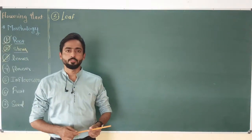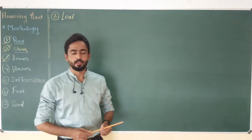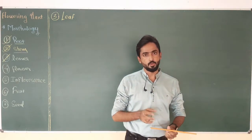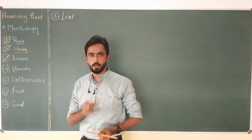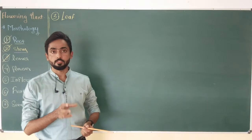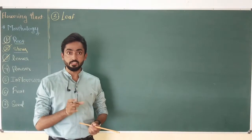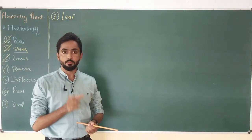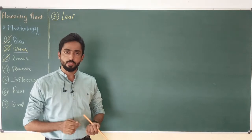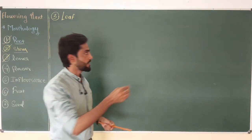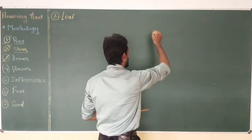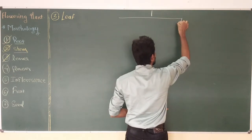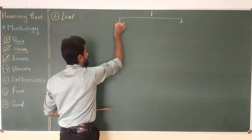Hello everyone. From the last few videos we are discussing about the different types of leaves found in the angiospermic plants or flowering plants. On the basis of number of incisions or cuts present in the lamina or leaf blade, the leaf of the angiospermic plant is divided into two main types: simple leaf and compound leaf.